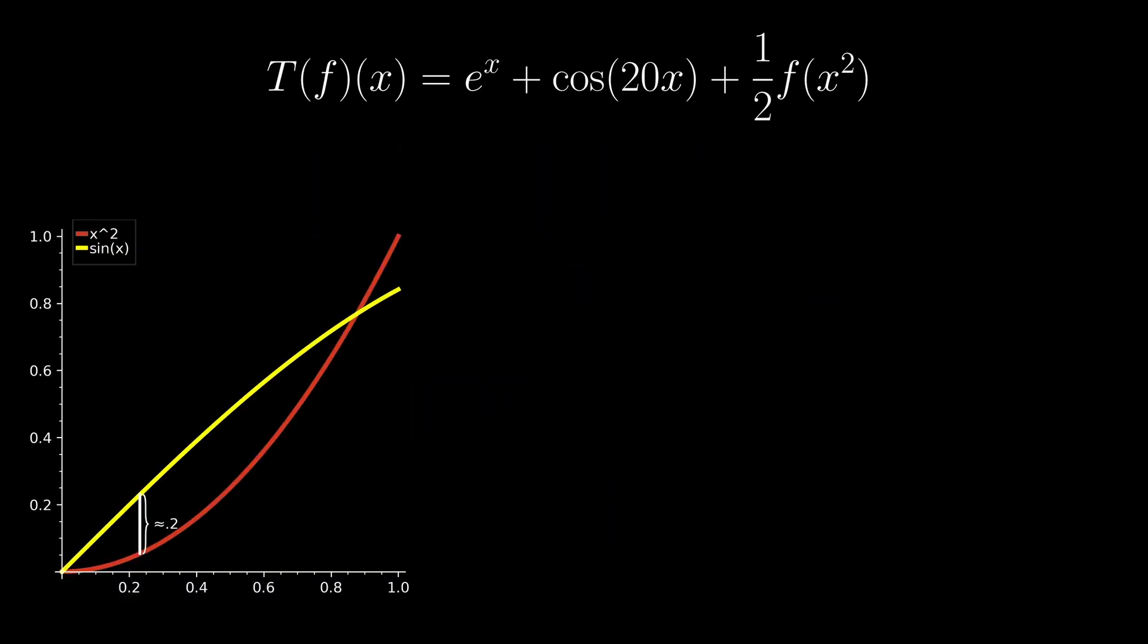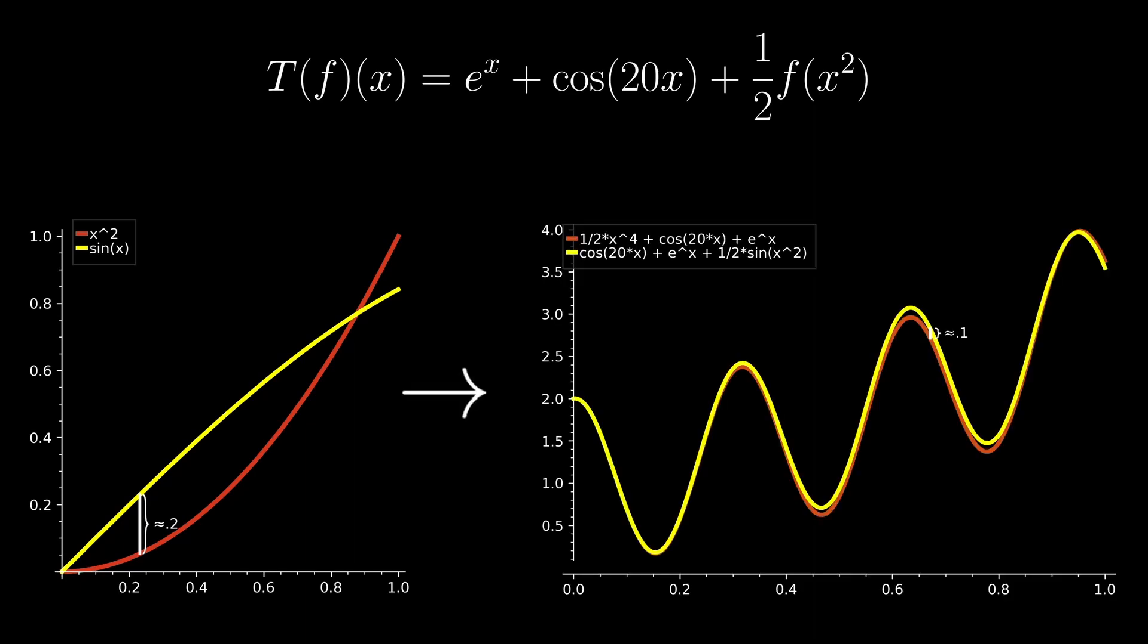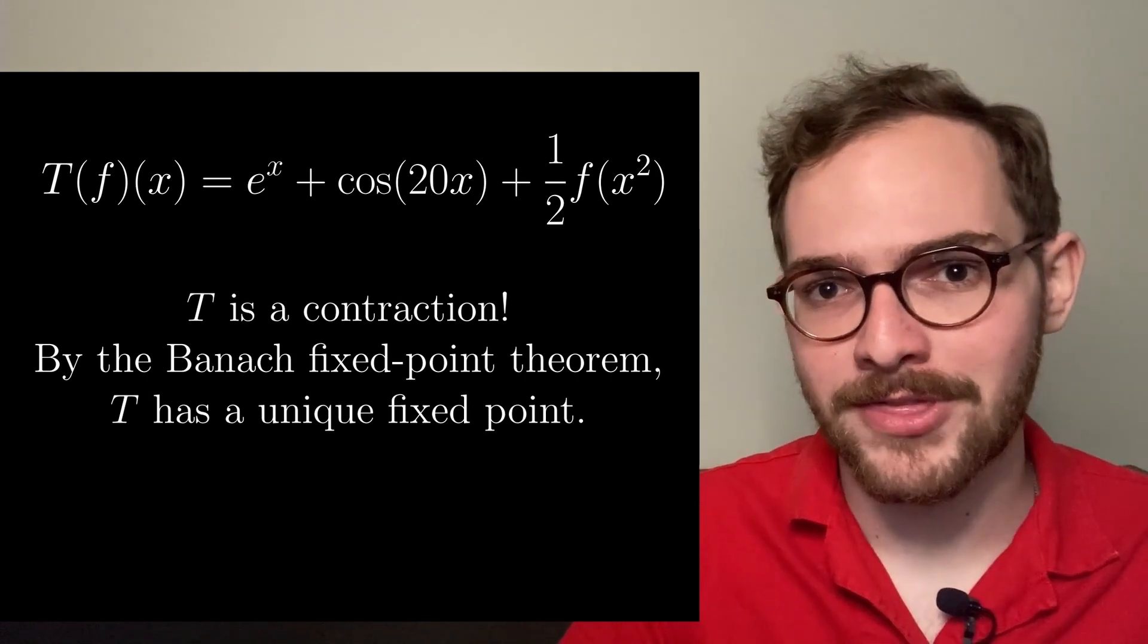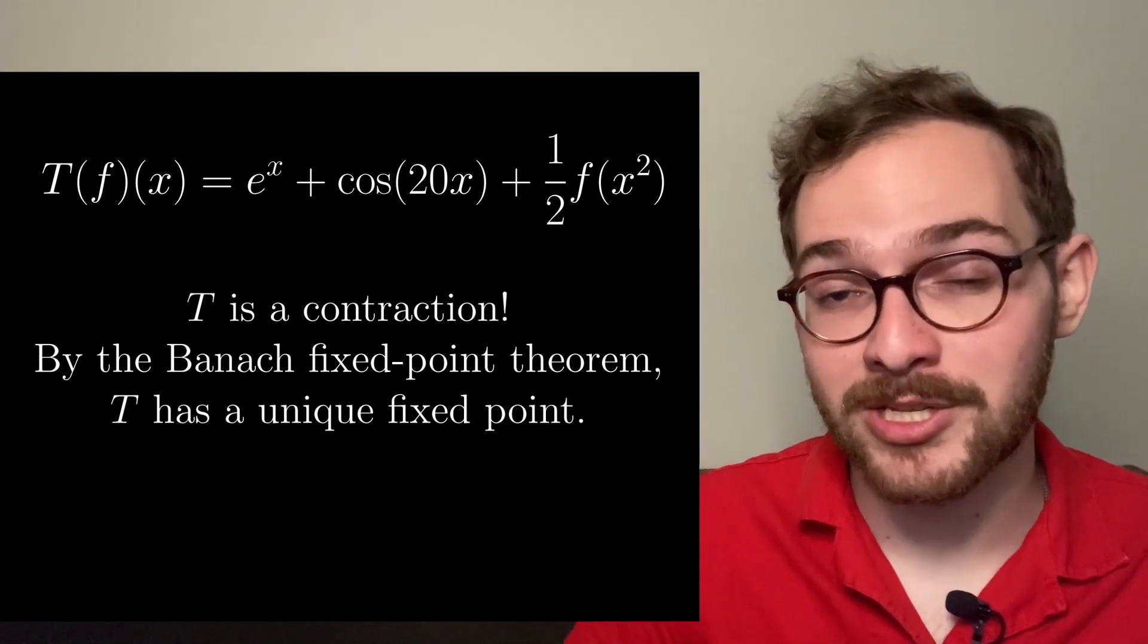For example, the distance between x squared and sine of x is about 0.2, but after applying T, we get a distance of about 0.1. So now we know that T is a contraction, and then by the Banach fixed point theorem, it has a unique fixed point.